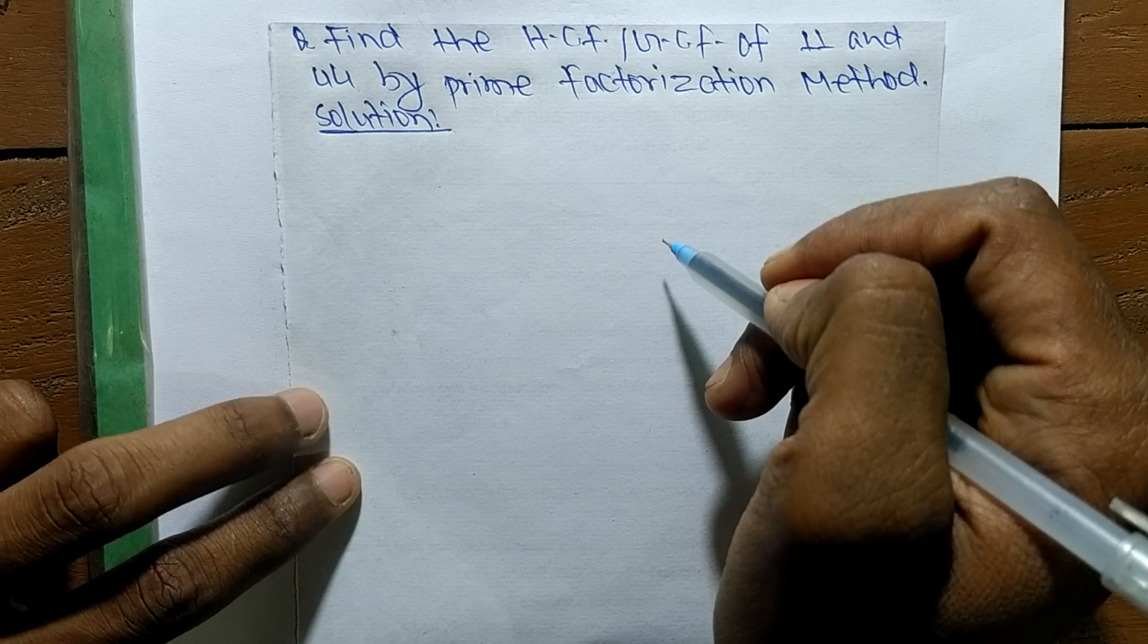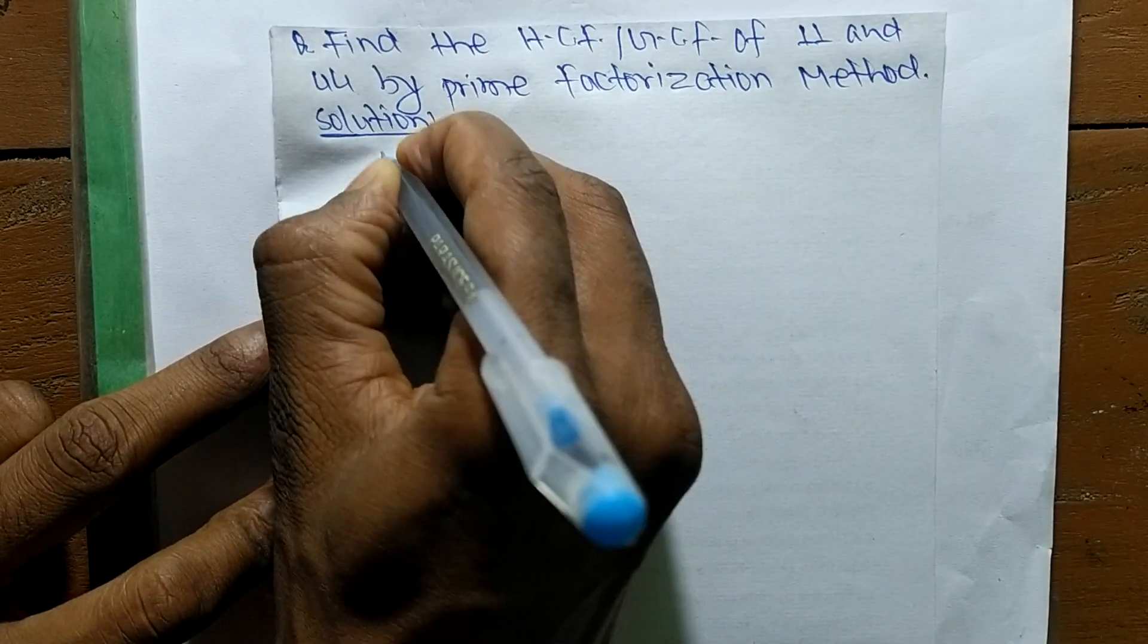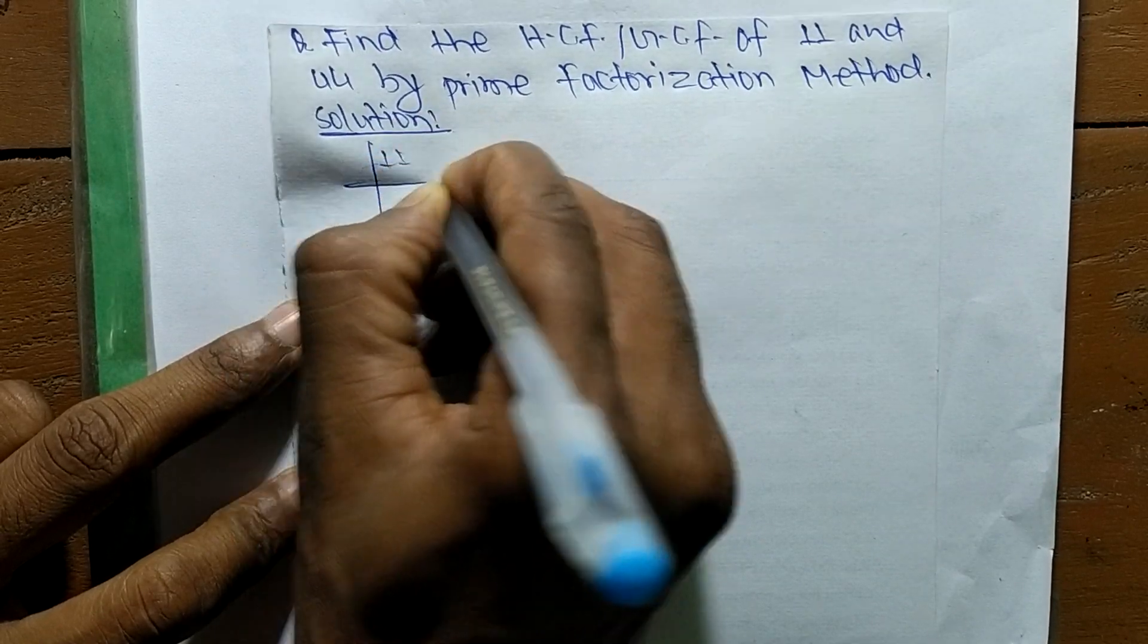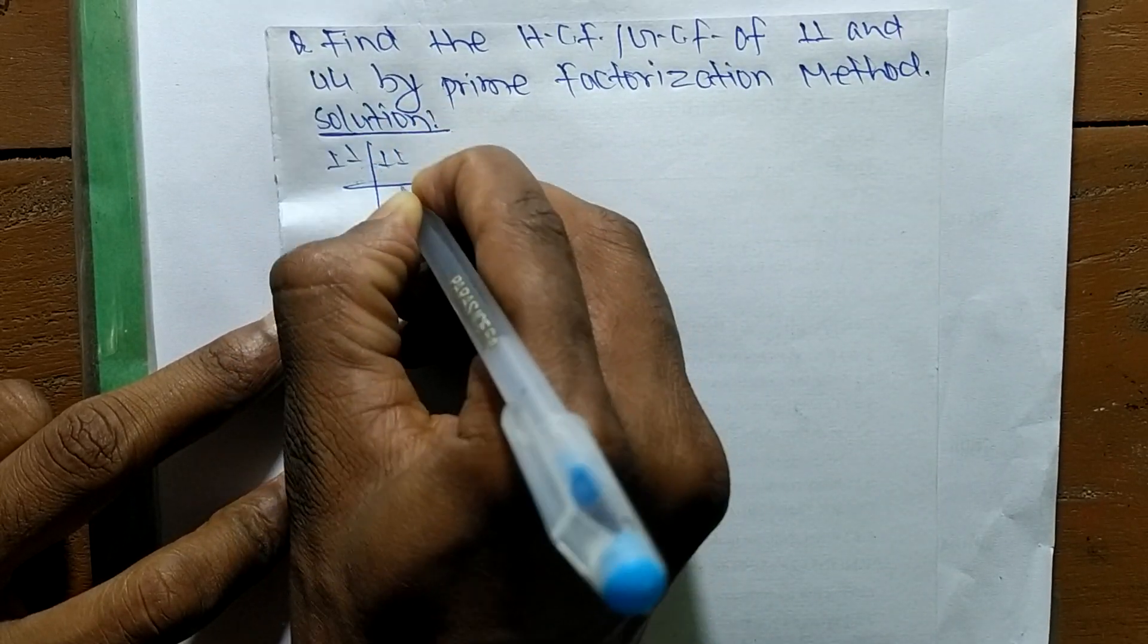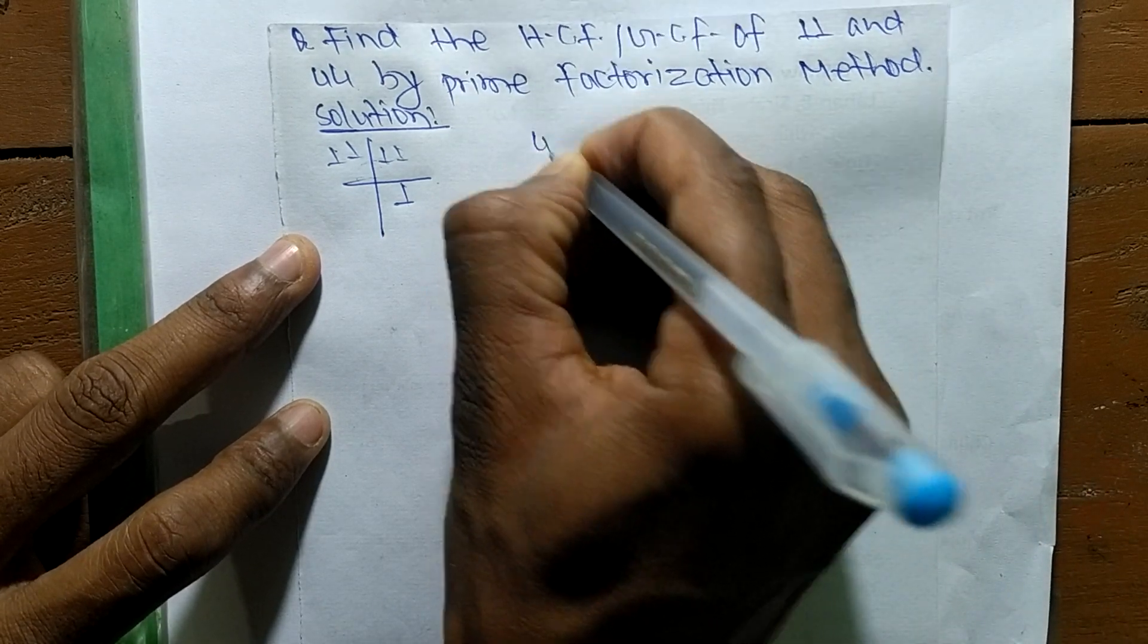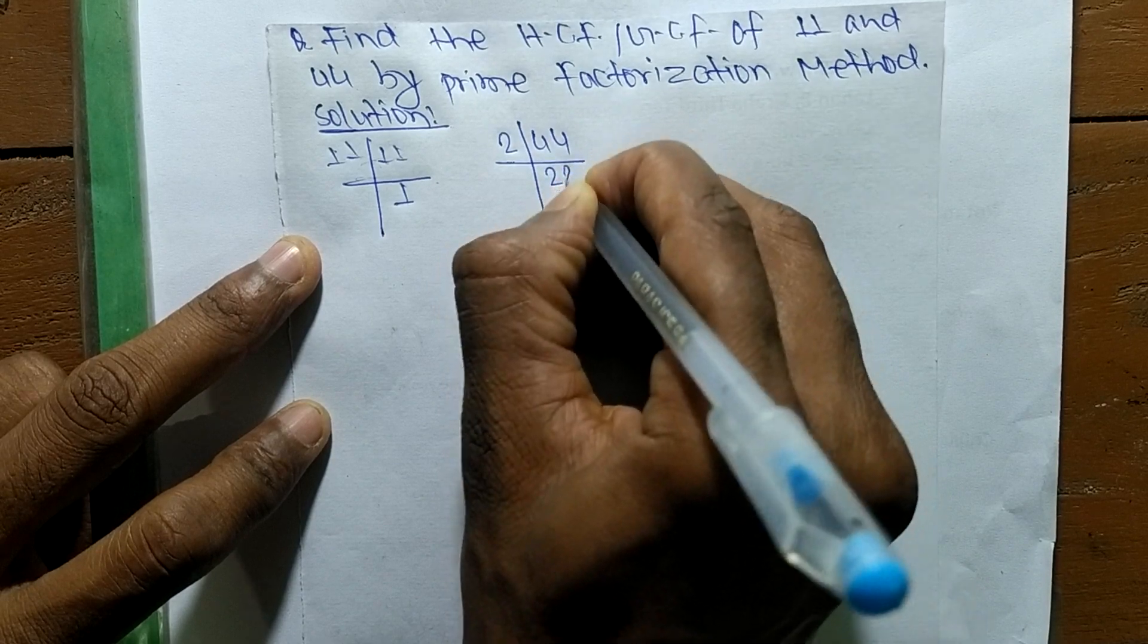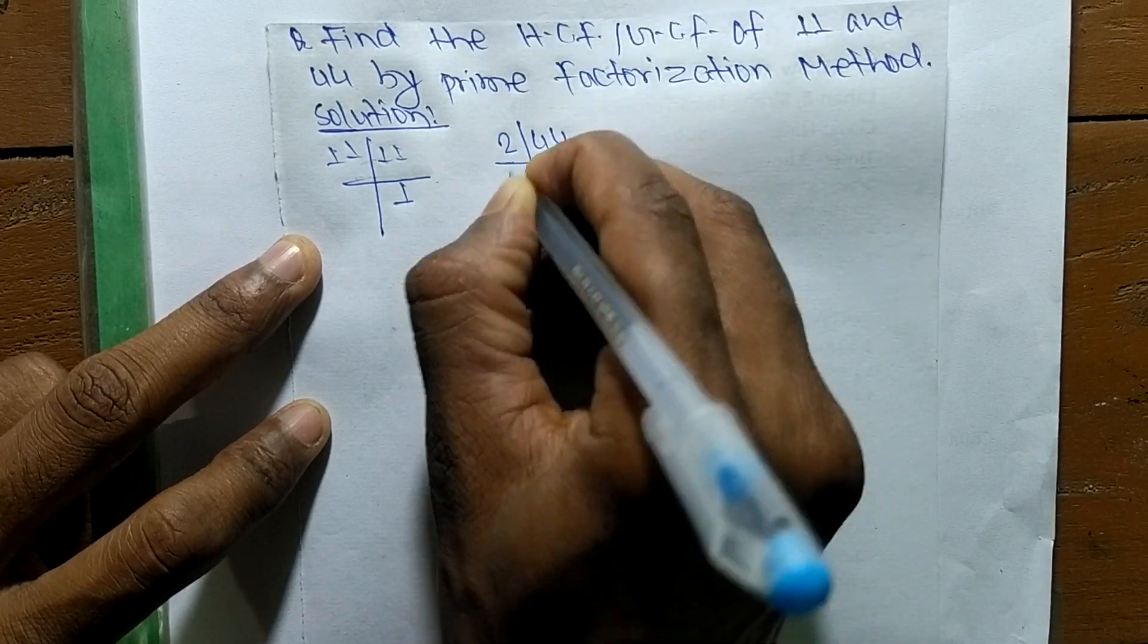In this method, first we find the prime factors of 11, which is 11 times 1, meaning 11. For the prime factors of 44, it is 2 times 22 equals 44, 2 times 11 equals 22, and 11 times 1 equals 11.